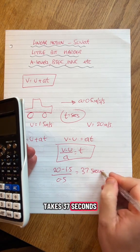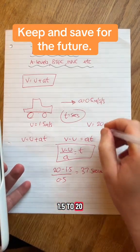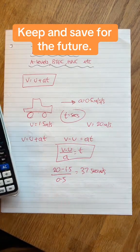That means it takes 37 seconds for this car to go from 1.5 to 20 with acceleration 0.5. V equals U plus AT. Ready, Benny, over and out.